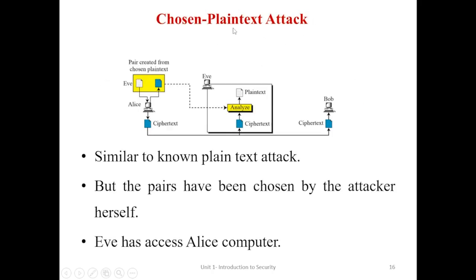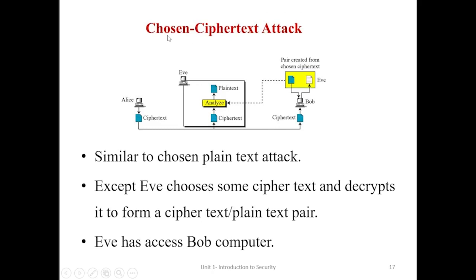The third cryptanalytic technique is the chosen plaintext attack, which is similar to the known plaintext attack. In the known plaintext attack, the attacker already holds plaintext and ciphertext pairs, but that list is available at the sender side. In a chosen plaintext attack, there is a possibility of the attacker acting as the sender. Eve tries to create plaintext and ciphertext pairs at the sender side, and using those pairs, analyzes the corresponding key by accessing the sender's computer.